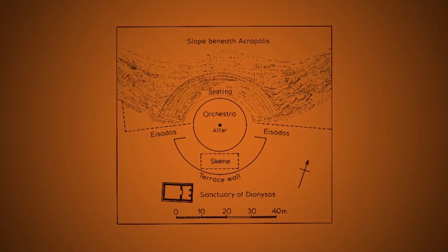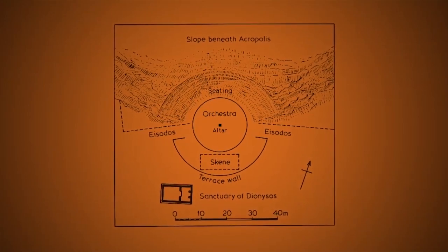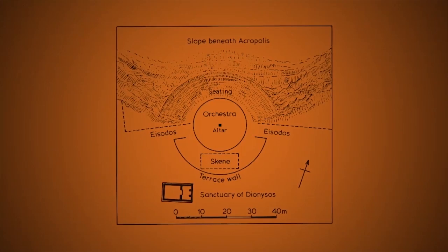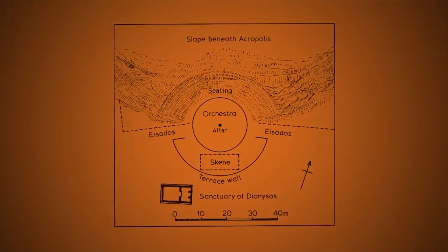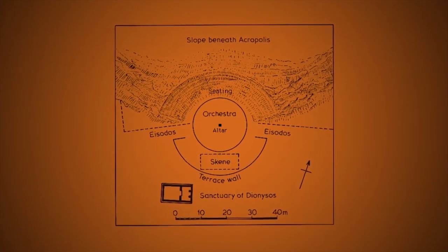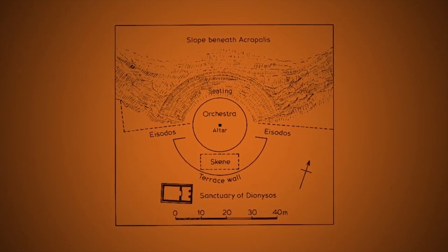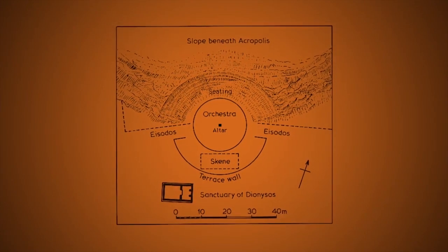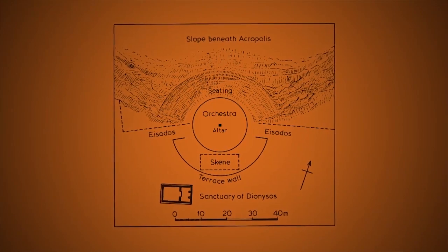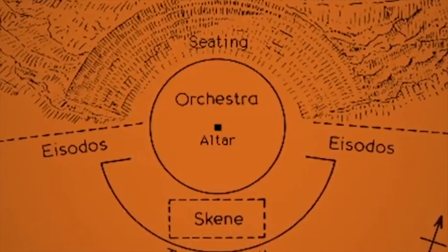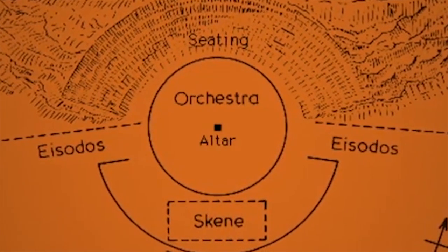At the centre was the orchestra, which at this time meant the place where the play was performed as well as where the religious ceremonies took place. It was a large circular area, about 150 meters across, with a floor of beaten earth. At its centre was an altar.